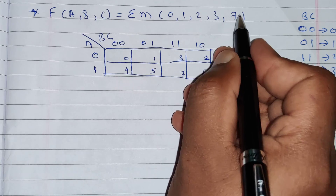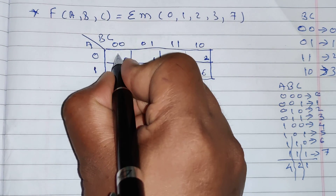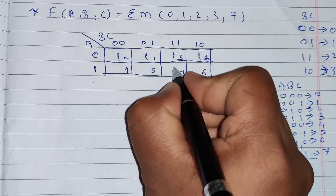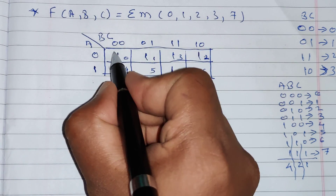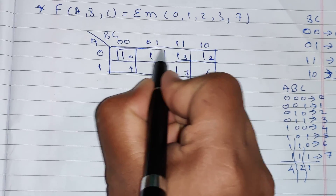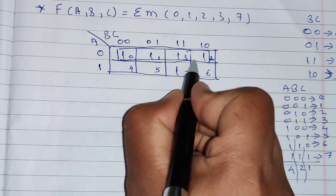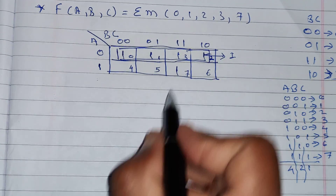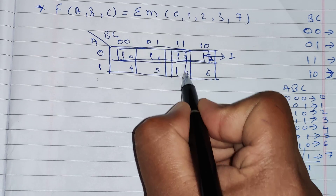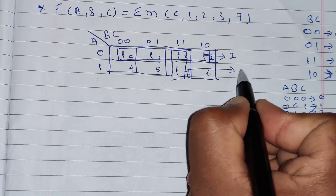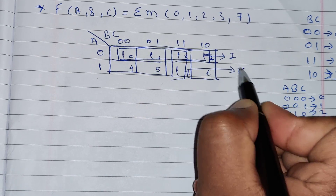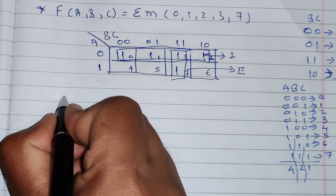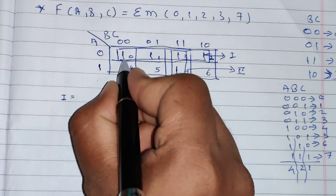We place 1s in cells corresponding to minterms 0, 1, 2, 3, and 7. We can make a group of four 1s together — this is Group 1. The two vertical 1s at minterm 3 and 7 form Group 2. Note that overlapping of 1s is allowed.